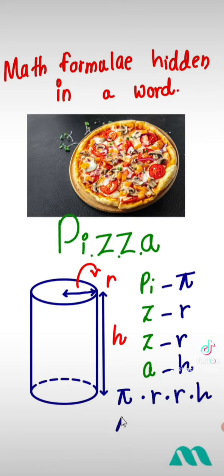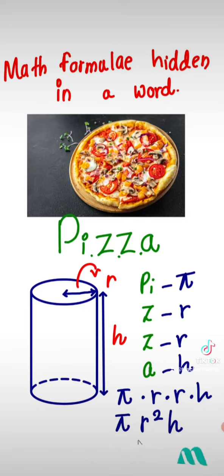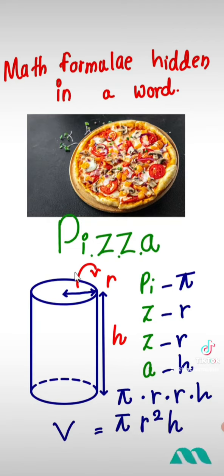That means pi times R times R, which is R squared times H. Pi times R squared times H is the volume of a cylinder. So through the word PISA, we can identify the formula used to find the volume of a cylinder.